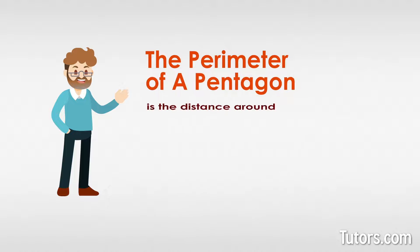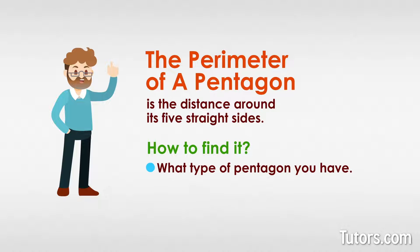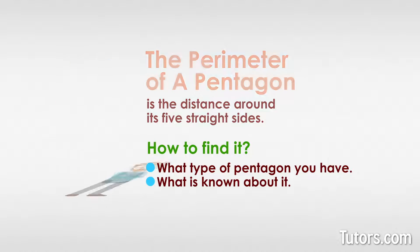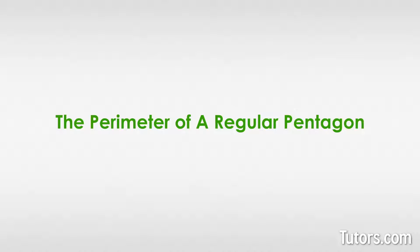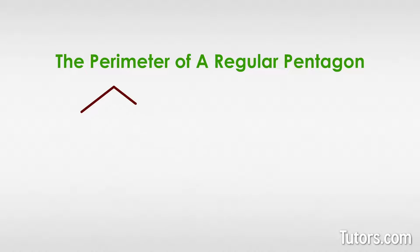The perimeter of a pentagon is the distance around its five straight sides. How you find the perimeter of a pentagon depends on what type of pentagon you have and what is known about it. It is easier to find the perimeter of a regular pentagon since we have a formula. To find the perimeter of an irregular pentagon, you must measure and add up the five sides.